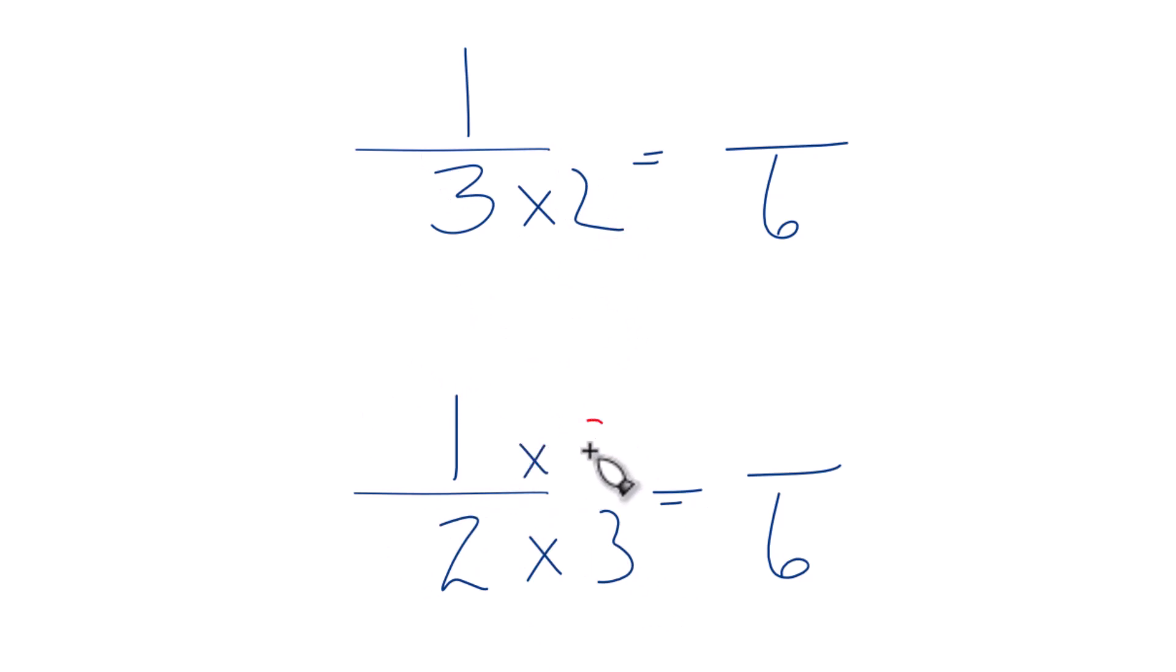So one times three, that equals three. And three over three, that's equal to one. So we just multiplied by one. We don't change the value, just the way it's represented.